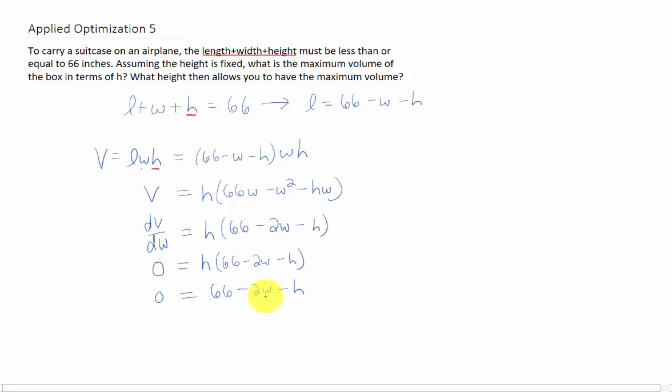Let's solve this for our variable, which is w. I'm getting that the w that maximizes this volume is going to be 66 minus h all over 2.